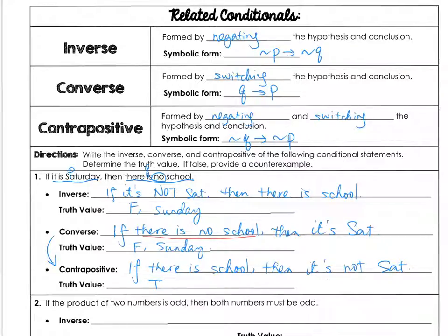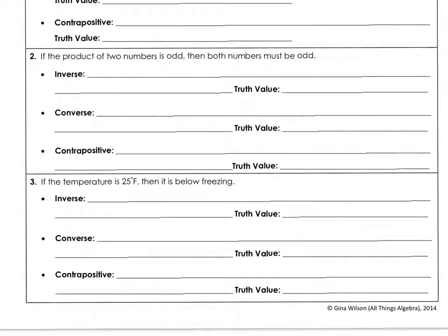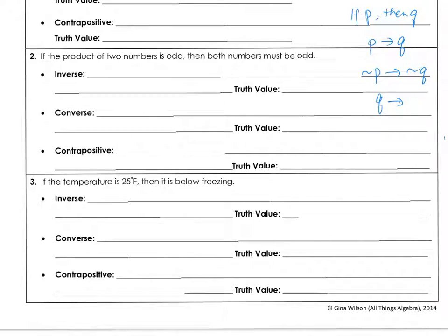This part can be challenging, but stay focused on the if-then statement: if P then Q. Remember, inverse is if not P then not Q. For converse, switch P and Q. Once you understand this, the rest is formulaic — it follows the same pattern.